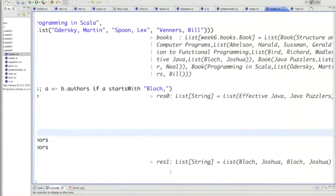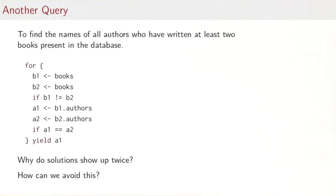We get Joshua Bloch—that's fine—but we actually get him twice. Why do solutions show up twice? The reason is that we have two generators that both go over books, so each pair of books will show up twice, once with the arguments swapped. For instance, with the books we would have one pair that would read Effective Java, and the other would read Java Puzzlers.